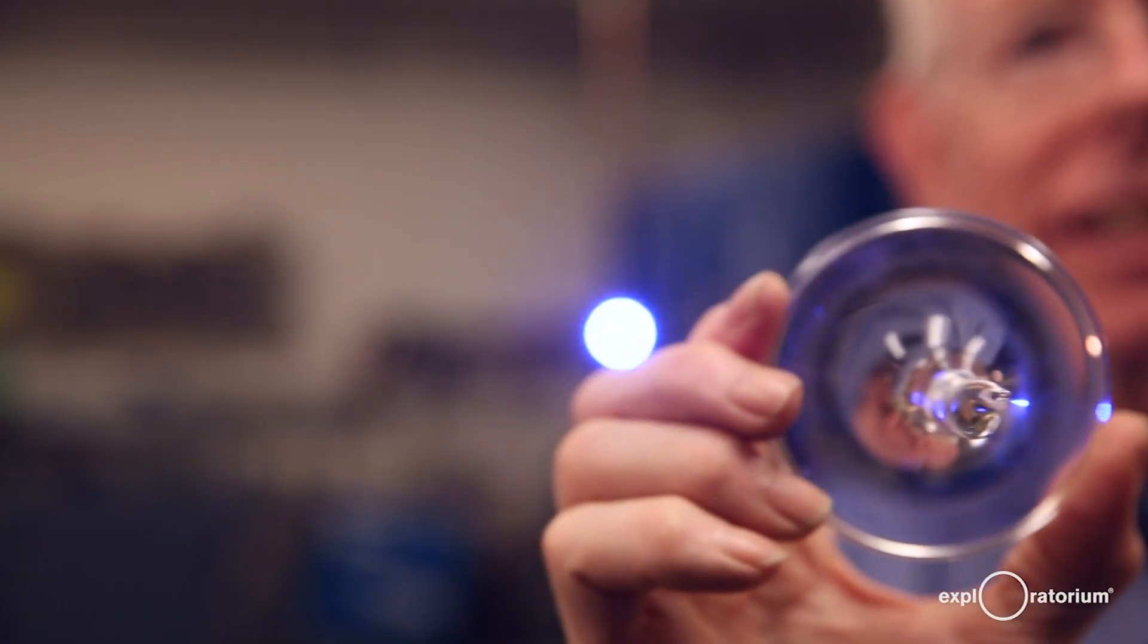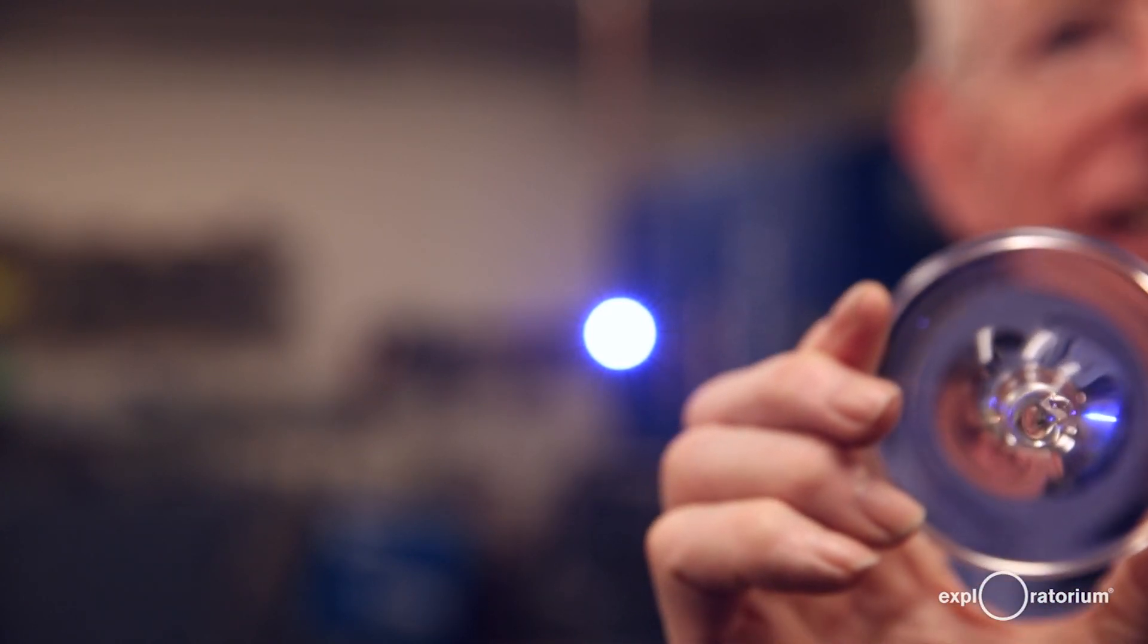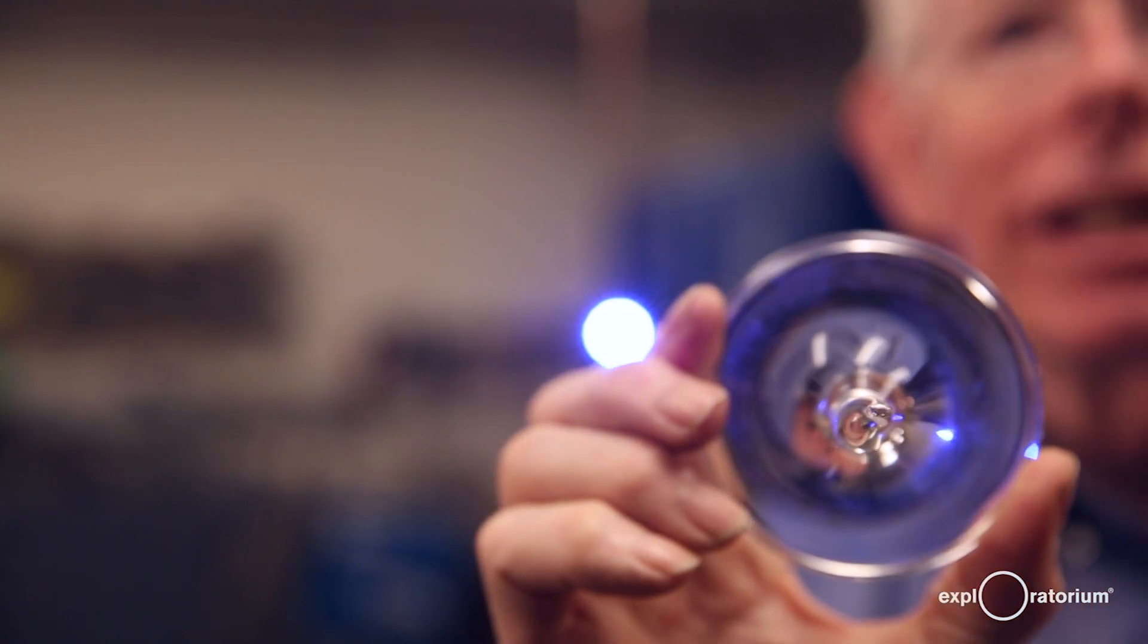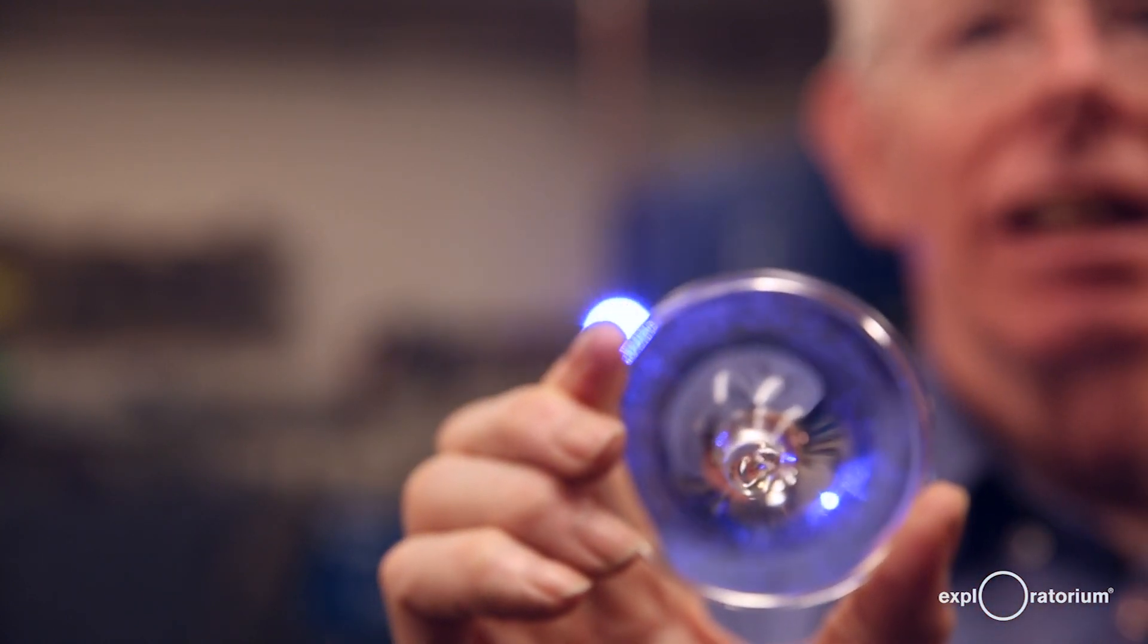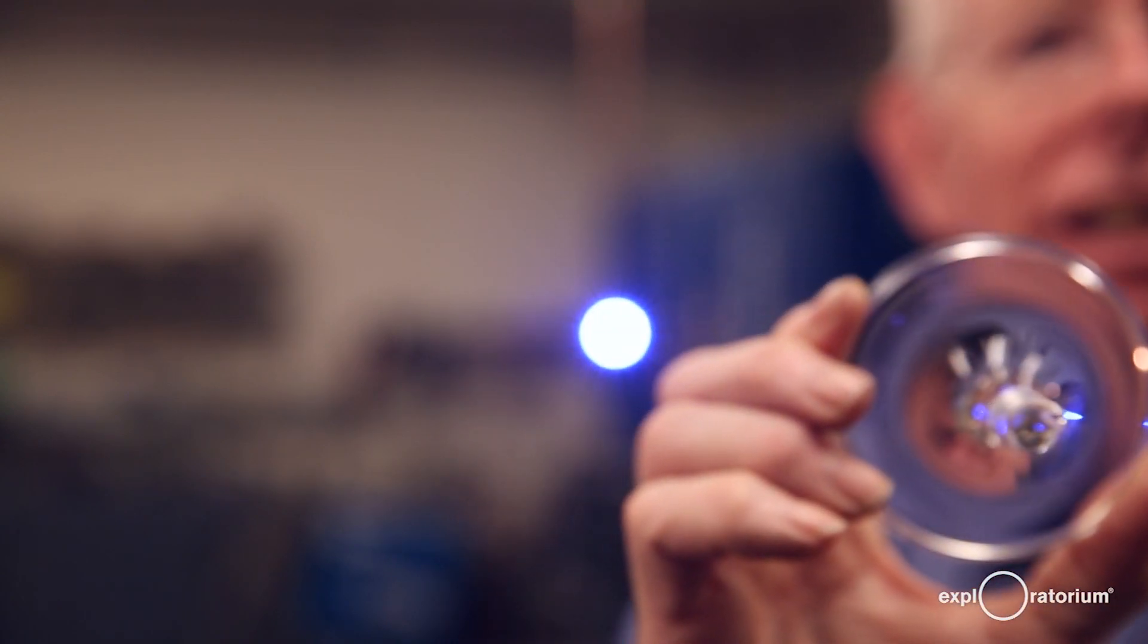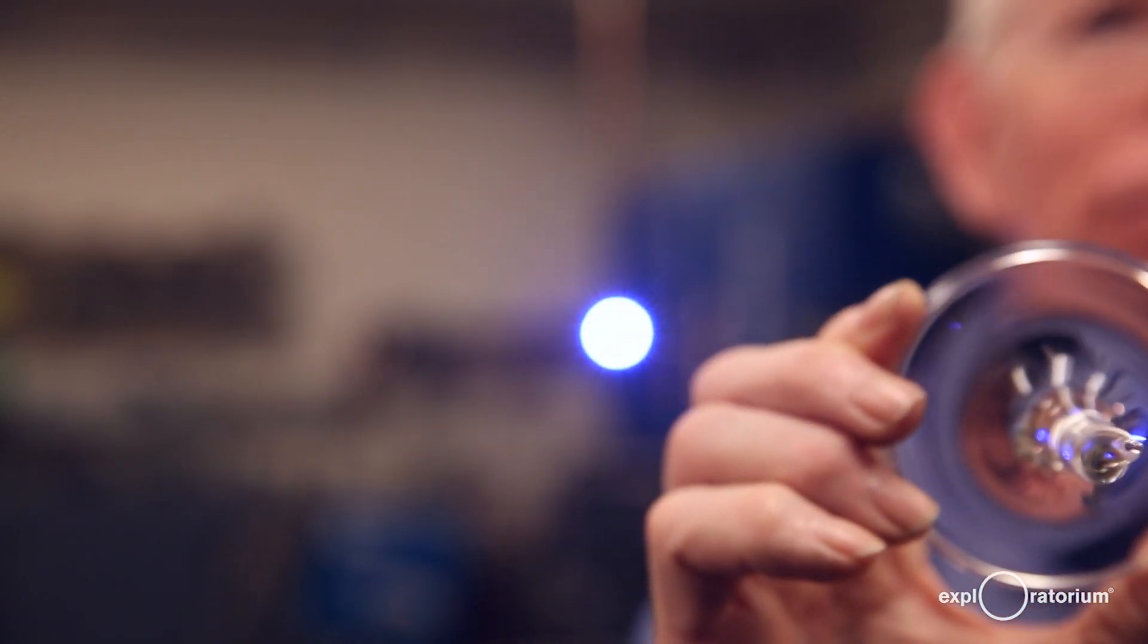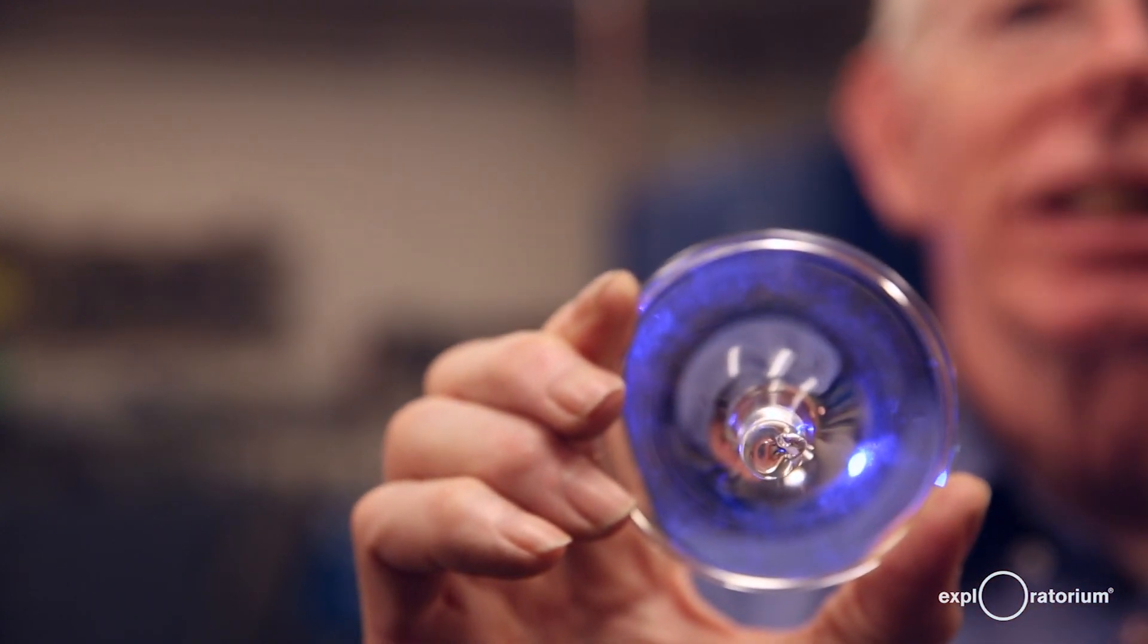When I move this to the side, you can see a point of light, and as I come in, you can see that point of light changing its position. The wine glass is bending the light from the distant star so you see it to the side.